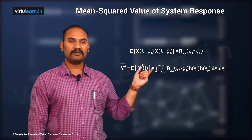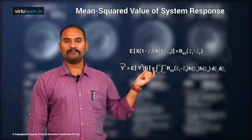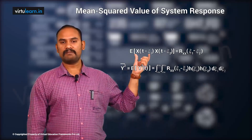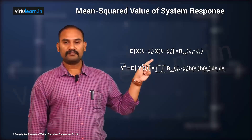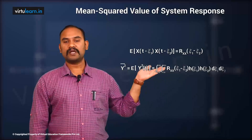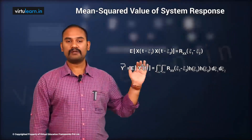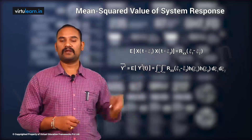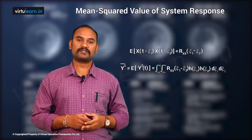Finally, the mean square value ȳ² = E[y²(t)] is equal to the double integral from −∞ to ∞ of Rxx(ζ₁ − ζ₂) · h(ζ₁) · h(ζ₂) dζ₁ dζ₂, substituting E[x(t − ζ₁) · x(t − ζ₂)] = Rxx(ζ₁ − ζ₂). This is the mean square value of the response — a two-dimensional integral involving the autocorrelation and impulse responses. From this two-dimensional integral you get the power.